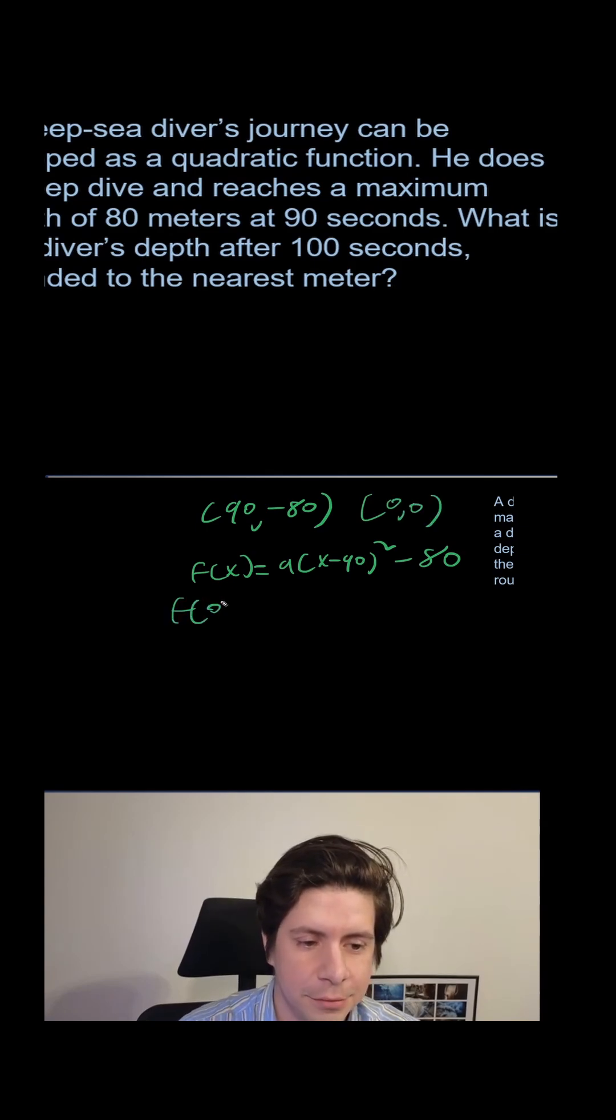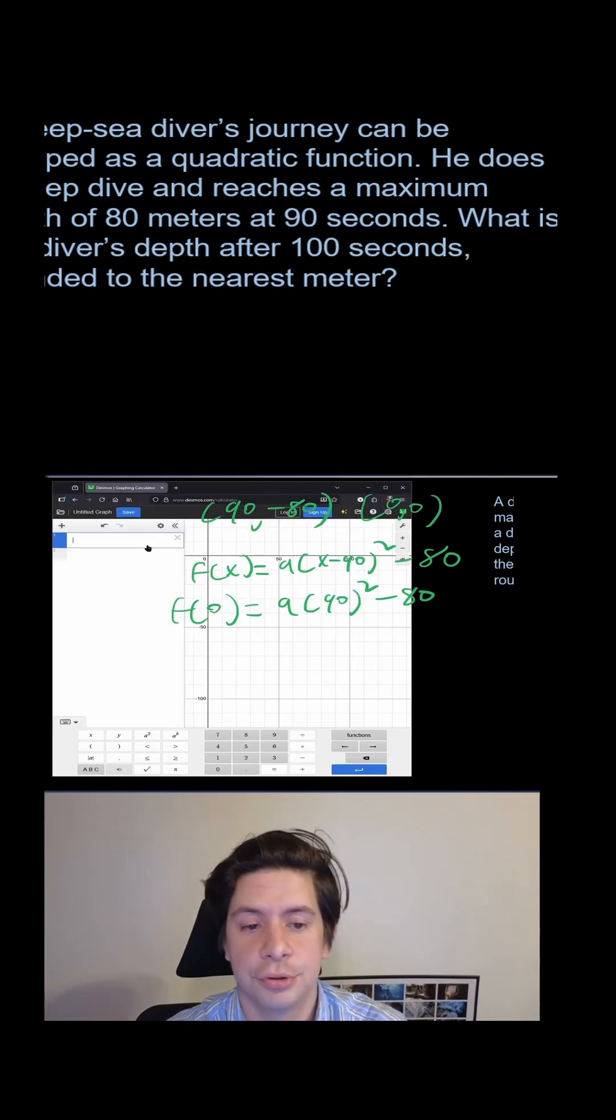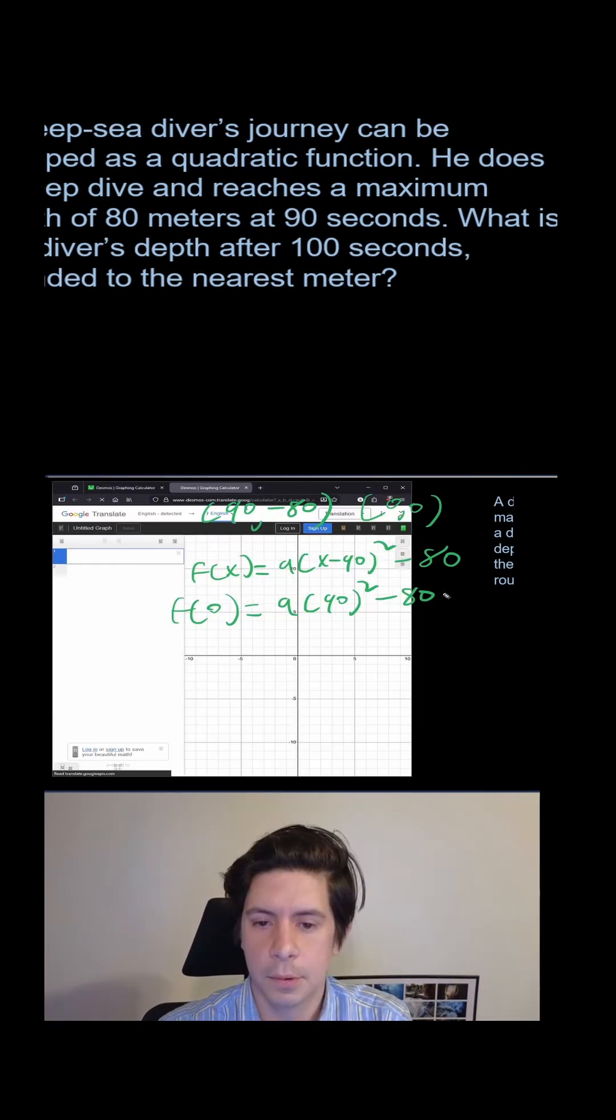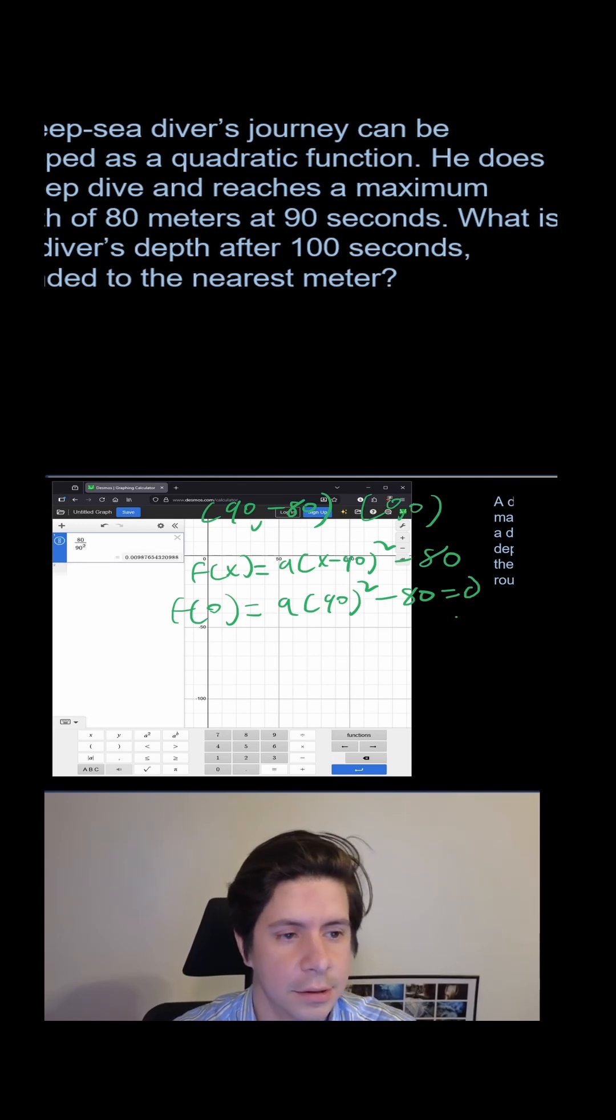So then f of zero equals a times 90 squared minus 80. You can find it now in the calculator and just do f of zero equals zero. This equals zero. We'll add 80 and then divide. So it's going to become 80 divided by 90 squared. Get point zero, zero, nine, eight, seven, two.